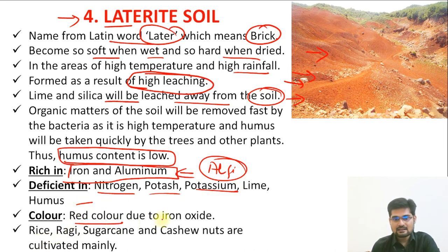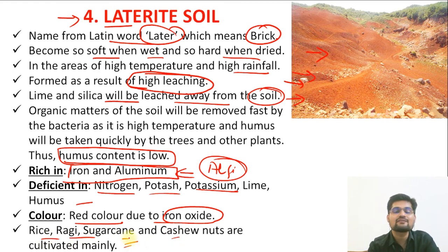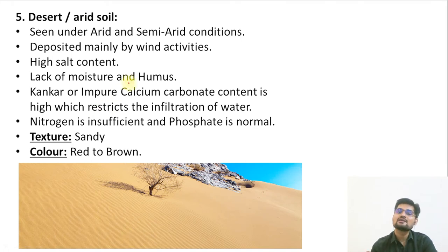Laterite soil is red in color largely due to the presence of iron oxide. The main crops grown are rice, ragi, sugarcane, and cashew nuts.